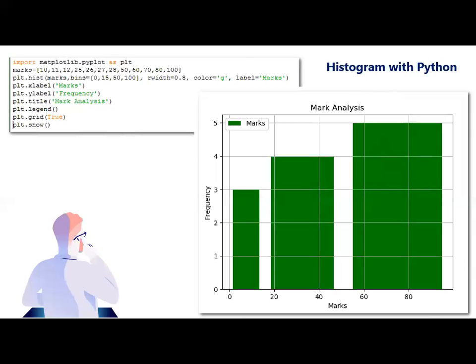By seeing the example you can understand. If you consider 0 to 15 how many values in marks. Let's say 0 to 15: 10, 11, 12, that's three values so you can see the frequency of that will be three for the first bin. Next one 15 to 50, so it will be 25, 26, 27, 28, 50, so it will be four.